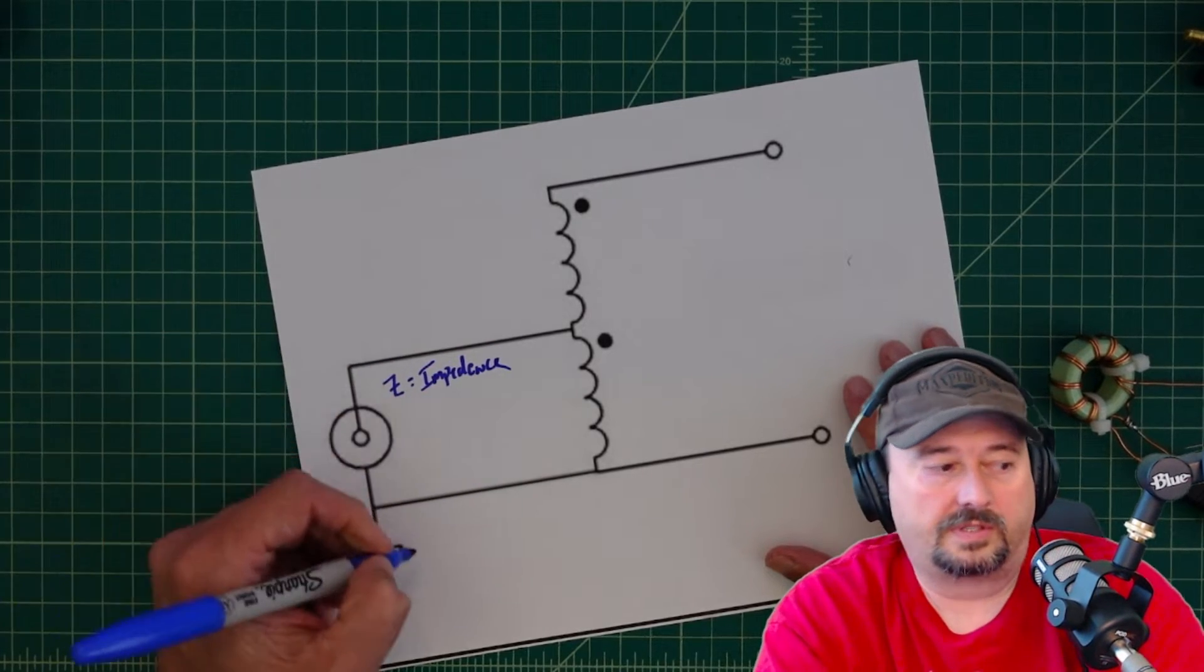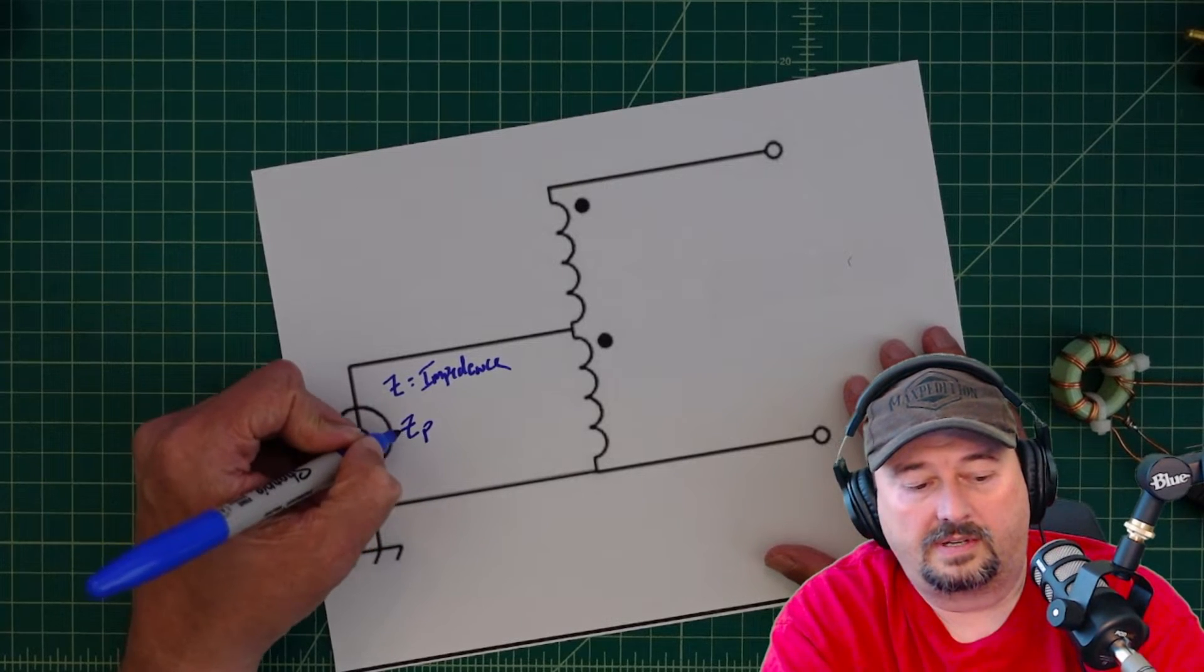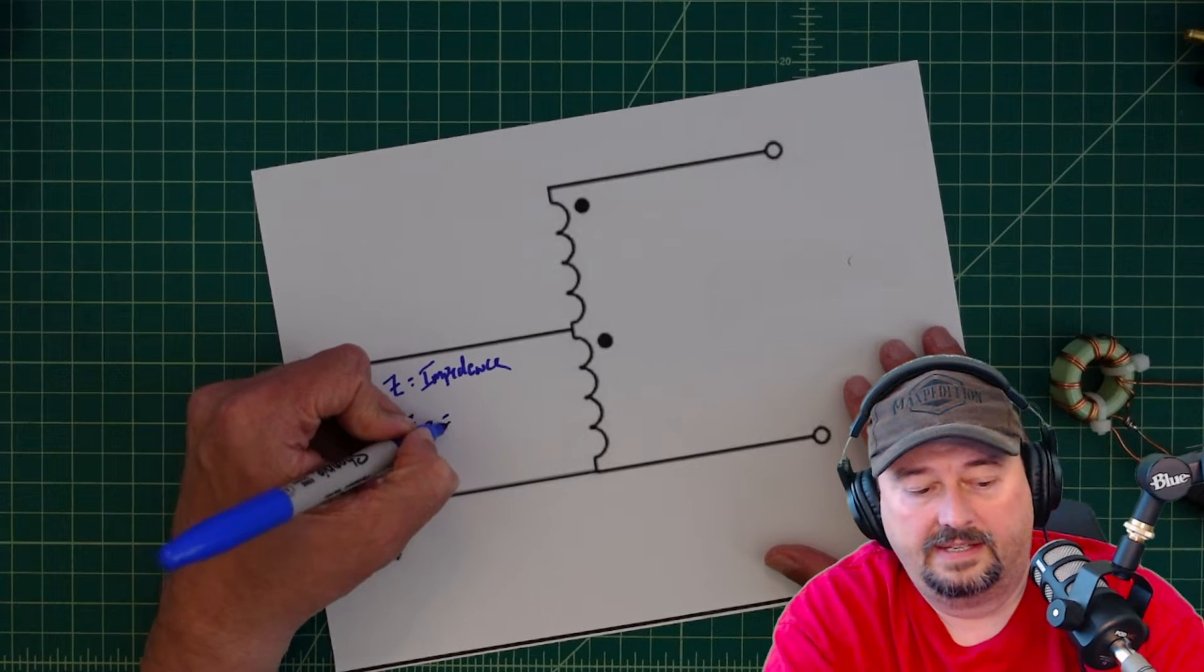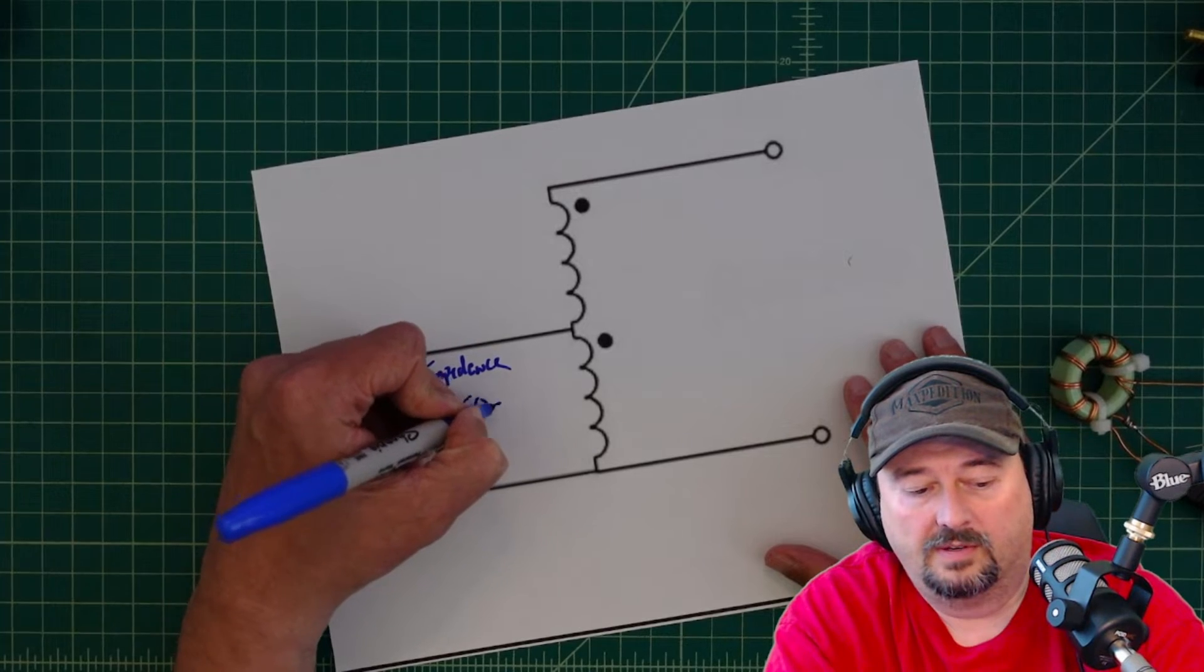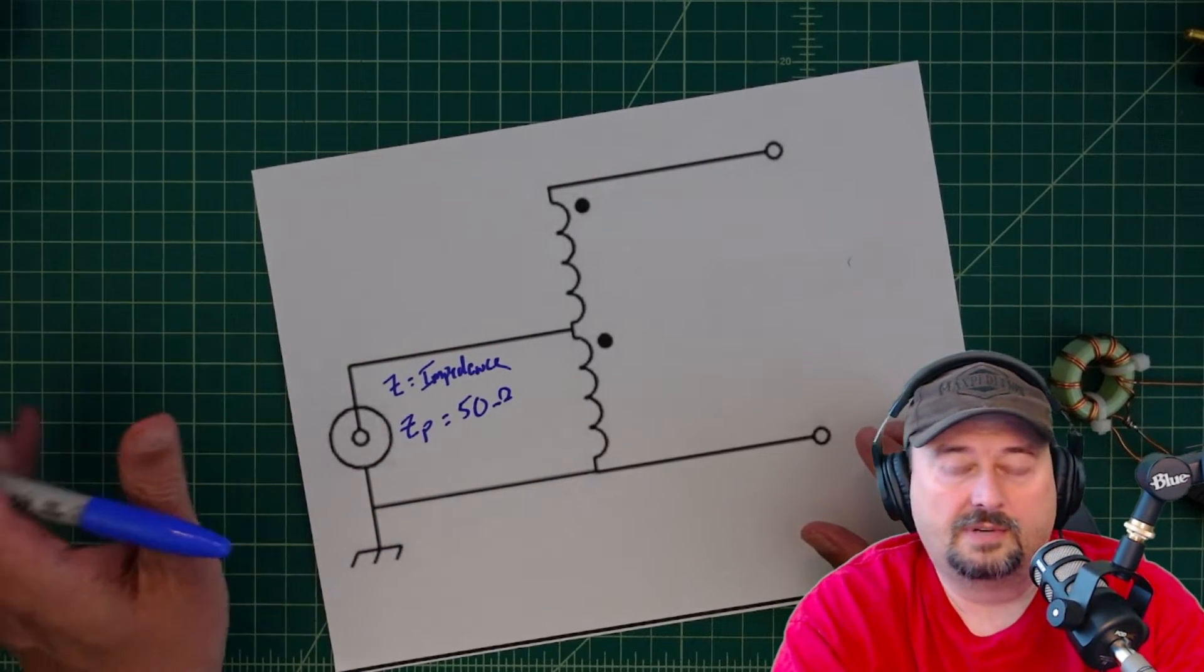And on our source or our primary side I should say we're going to call that Z primary which means our impedance on our primary side. That is equal to 50 ohms. And that's because our radio has a 50 ohm impedance. And our coaxial cable has a 50 ohm impedance.